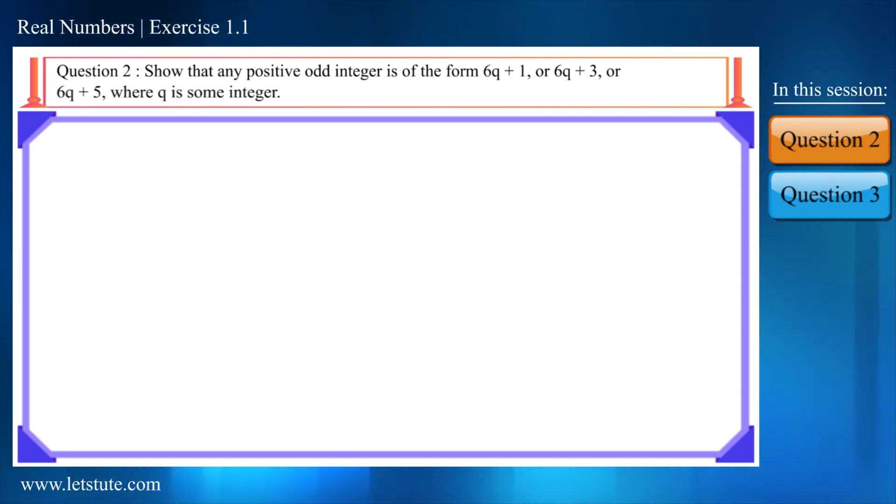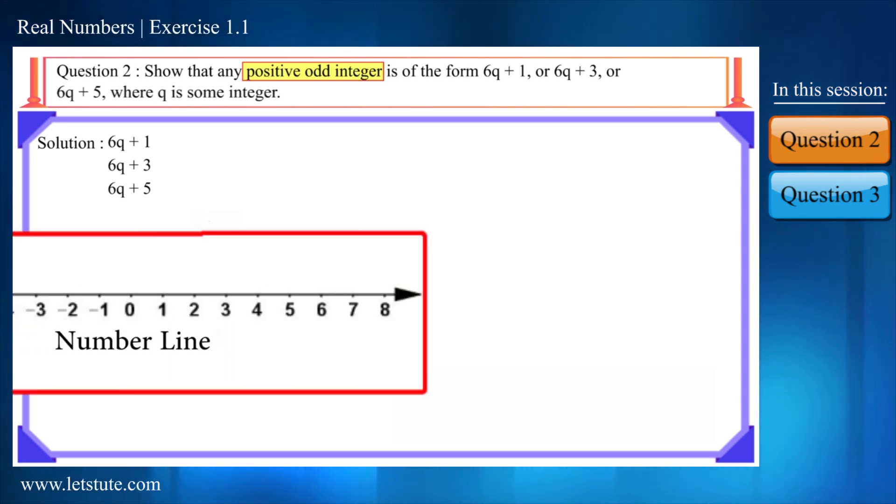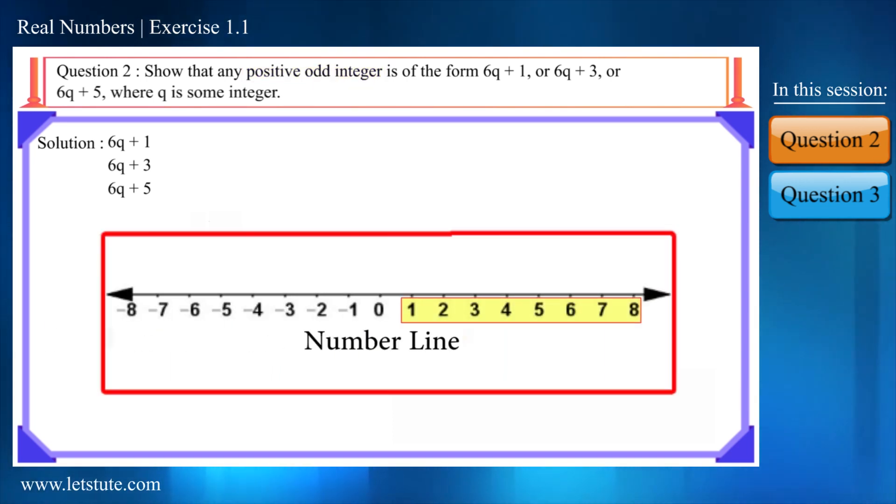Friends, now what exactly is a positive odd integer? Positive odd integers are all the odd numbers which lies on the right side of 0 on the number line, for example 1, 3, 5, 7 and so on.